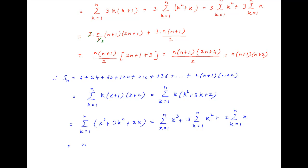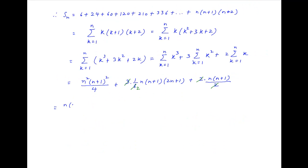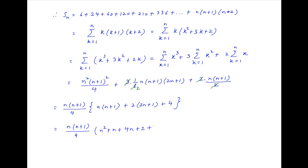Substituting the standard results for summation k cubed, summation k squared, and summation k, we get n squared times n plus 1 whole squared divided by 4, plus 3 times 1 upon 6 times n times n plus 1 times 2n plus 1, plus 2 times n times n plus 1 upon 2. Now take n times n plus 1 upon 4 as a common factor, multiplied by inside the brackets n times n plus 1 plus 2 times 2n plus 1 plus 4, and this is equal to n times n plus 1 upon 4 multiplied by n squared plus 5n plus 6.